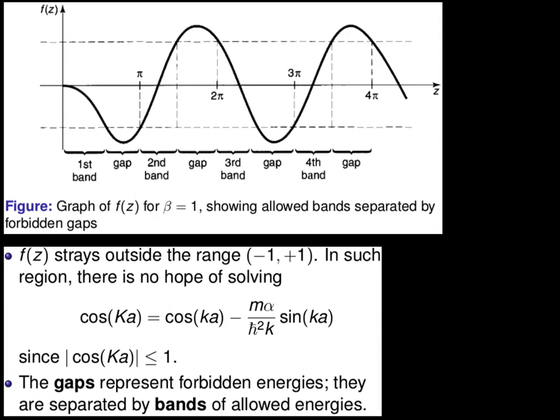For β equals 1, the z values are multiples of π. The important thing to notice is that f(z) stays outside the range negative 1 to positive 1. In such region, there is no hope of solving the formula. Why? Because cos(Ka) must be less than or equal to 1. The gaps represent forbidden energies separated by regions of allowed energies.